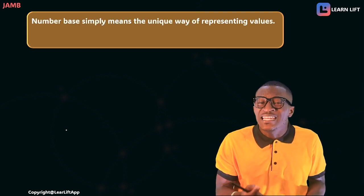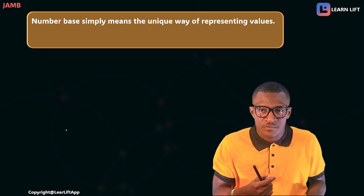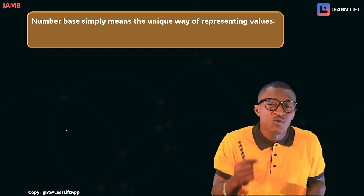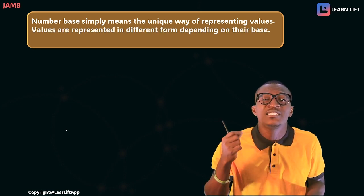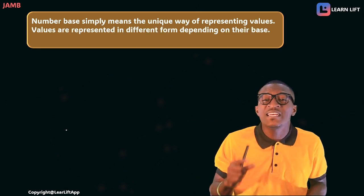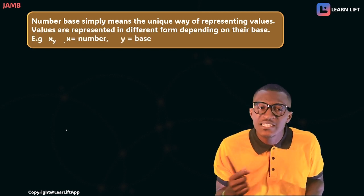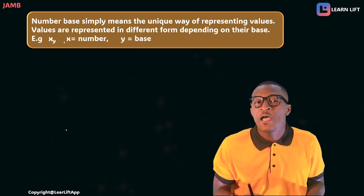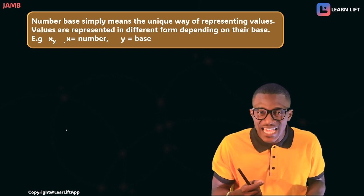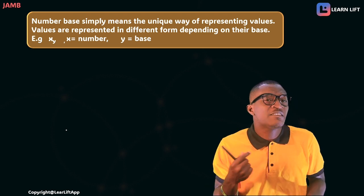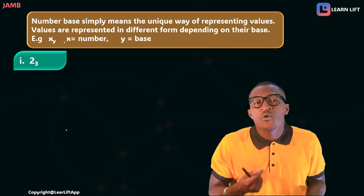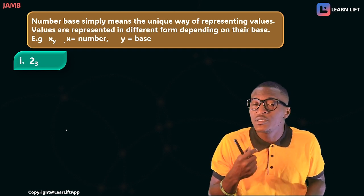So let's start from the first topic. What is number base? Number base is simply the unique way of representing values. The unique way in which values are represented is called number base. Values are represented in different forms depending on their base. For example, we have x to the base y, where x is the number and y is the base. So for example, we have 2 in base 3 — two is the number and three is the base.